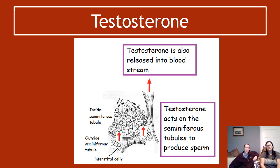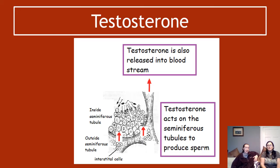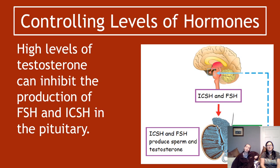Testosterone, once produced, is released into the bloodstream and travels to various locations throughout the body. One of its main jobs is acting on the seminiferous tubules to encourage sperm production — that is its primary role in producing gametes. Testosterone does have some other roles in the body, but stimulating sperm production in the seminiferous tubules is the key one here.